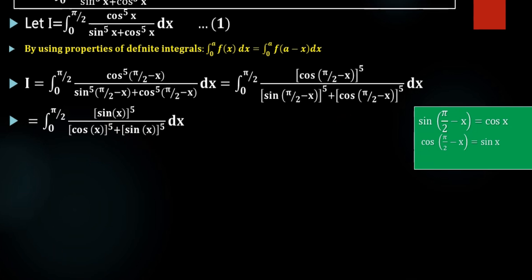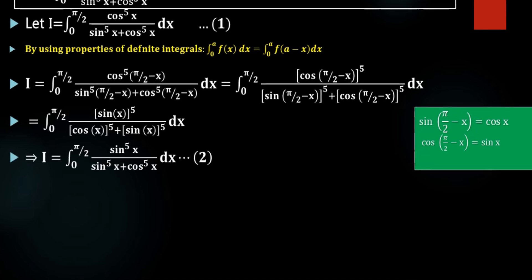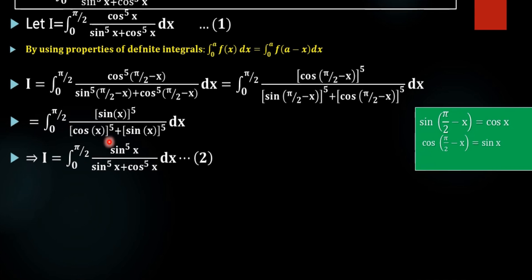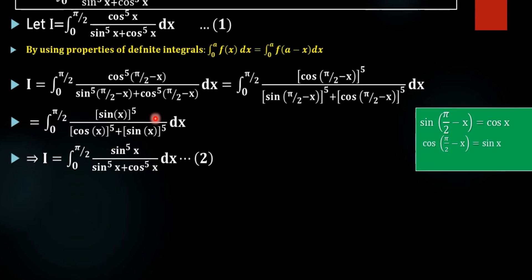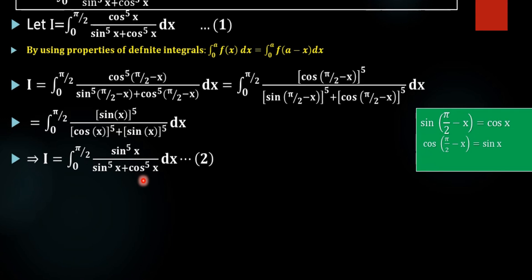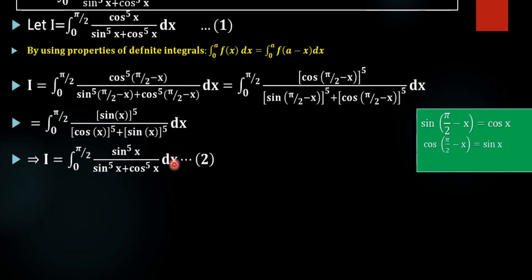Rewriting (sin x)⁵ as sin⁵x and (cos x)⁵ as cos⁵x, we have i equal to the integral from 0 to π/2 of sin⁵x divided by (cos⁵x plus sin⁵x) dx. We are taking this as equation number 2.